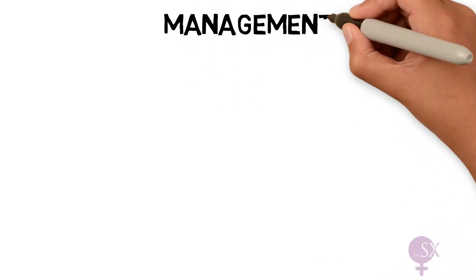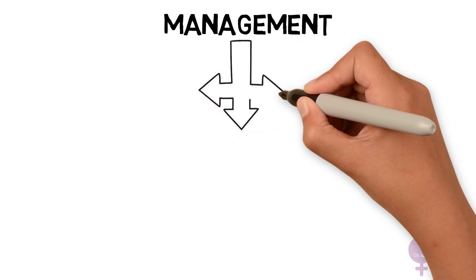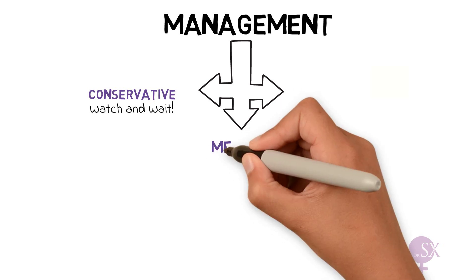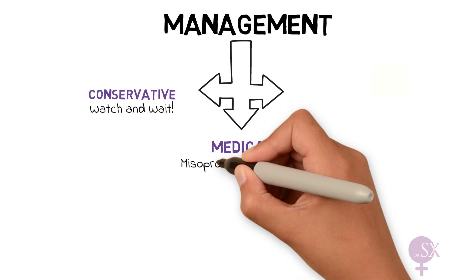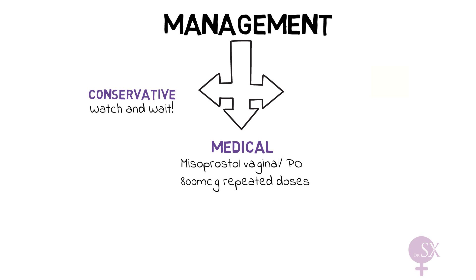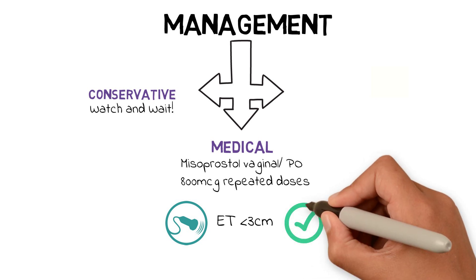Moving on to management, there are three options. First, the conservative option, where we watch and wait for the patient to pass products of conception spontaneously, with appropriate follow-up. Then we have medical management, where we use misoprostol as vaginal tablets — there is also an oral option, but we usually use the vaginal route. Repeated doses can be given. An ultrasound is always performed after medical management; if the endometrial thickness is less than 3 cm, the medical management is considered successful.